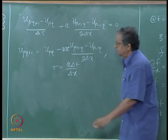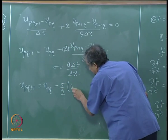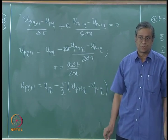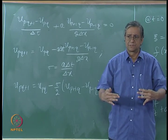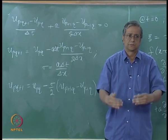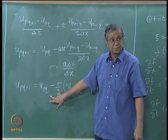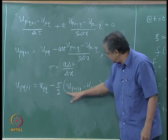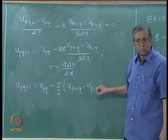So: u_{p,q+1} = u_{p,q} − (σ/2)·(u_{p+1,q} − u_{p−1,q}). We have what I call an automaton — given values at time level q, we can increment to the next time level q+1, marching the initial condition forward in time.